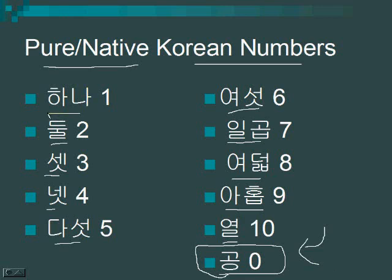Let's try that again: 하나, 둘, 셋, 넷, 다섯, 여섯, 일곱, 여덟 — don't say the 피읍 — 아홉, 열. The 피읍 is there, you just don't want to say it. One more time: 하나, 둘, 셋, 넷, 다섯, 여섯, 일곱, 여덟, 아홉, 열. And lastly, our favorite 공.